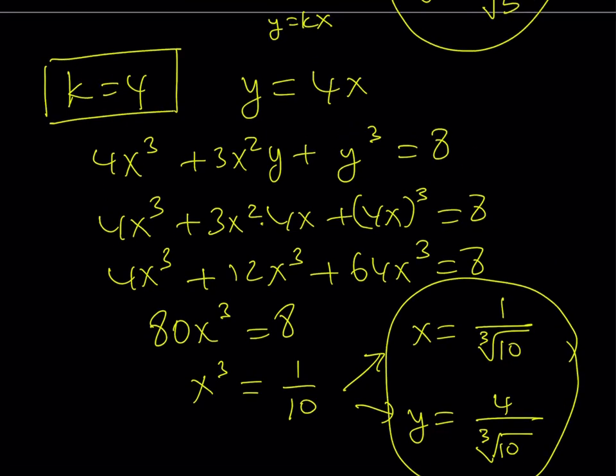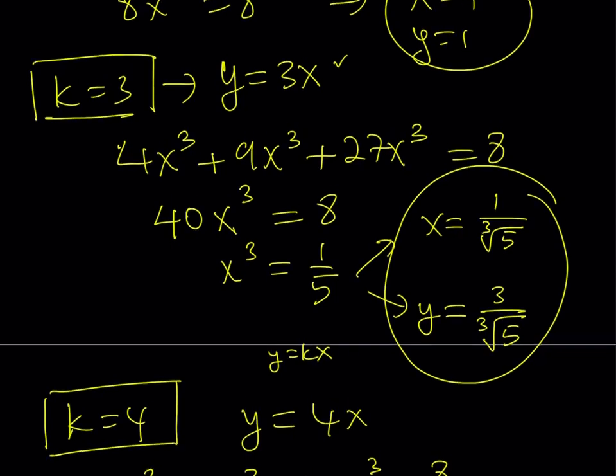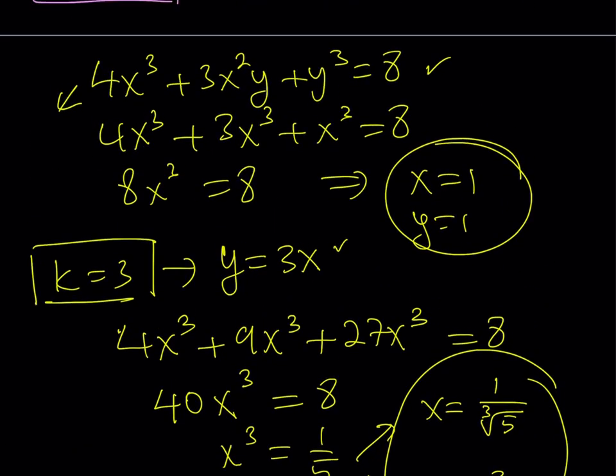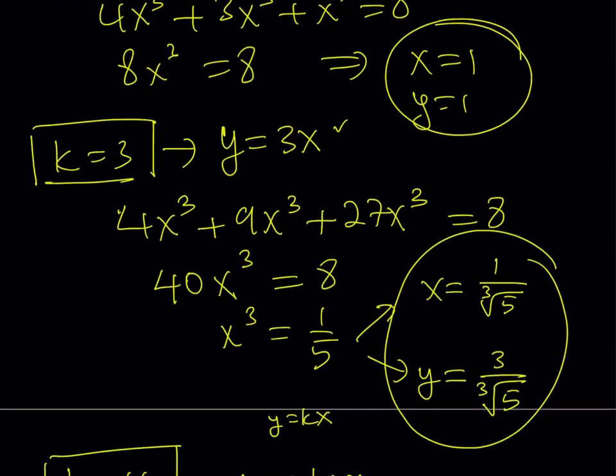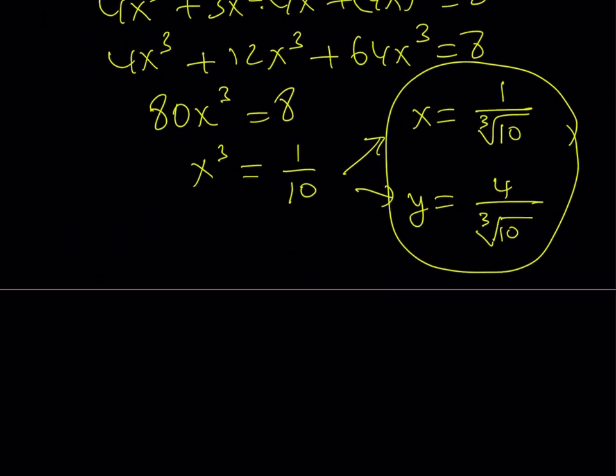So since we have 3 different values for k, we got 3 different ordered pairs as solutions. And let's go ahead and put these together to see the whole solution set. And that's going to conclude our video.